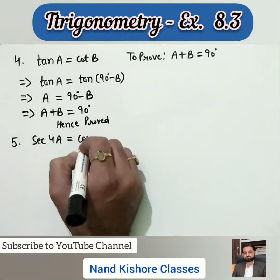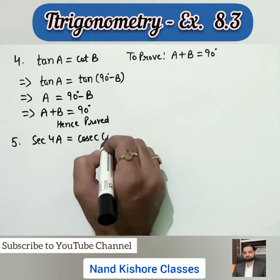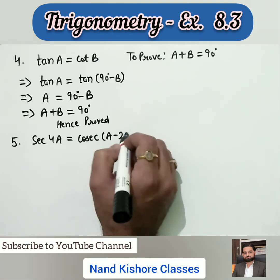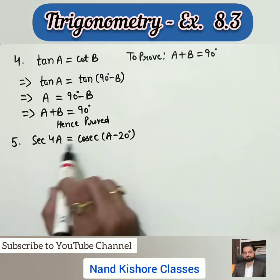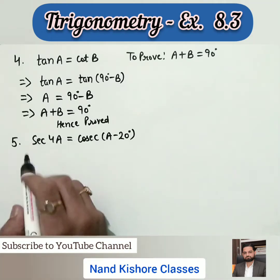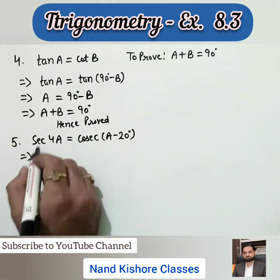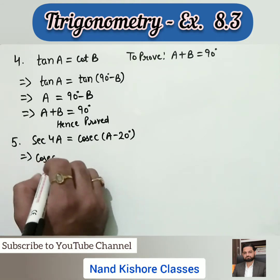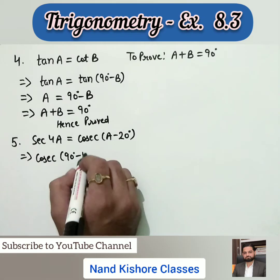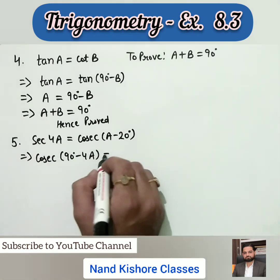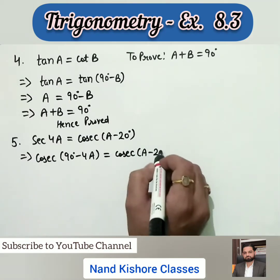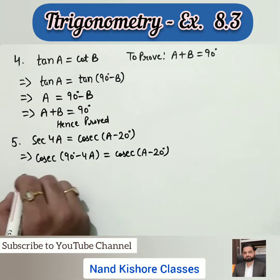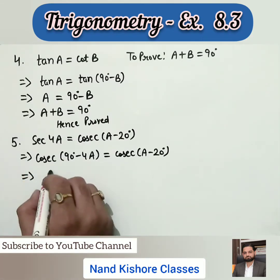Question number five: sec(4a) is given equal to cosec(a - 20°). Still, the approach is the same — both sides must have the same trigonometric ratio to find the value of a. We convert sec(4a) into cosec(90° - 4a). The right side already has cosec(a - 20°). Now cosecants are on both sides, so the angles must be equal.